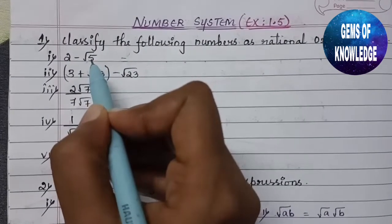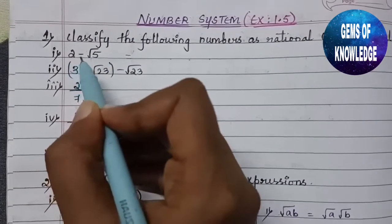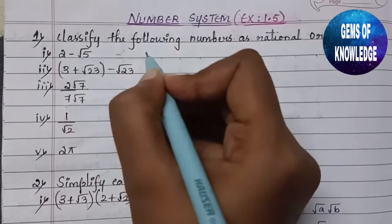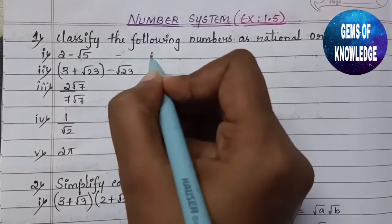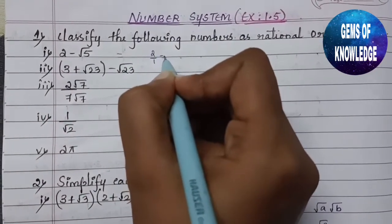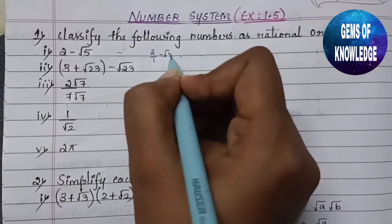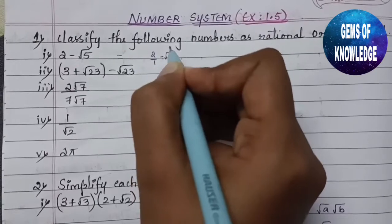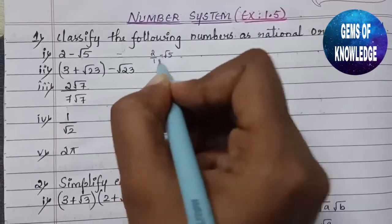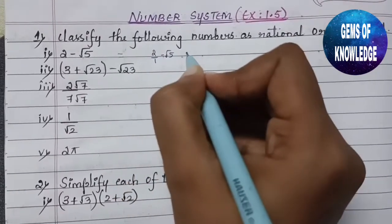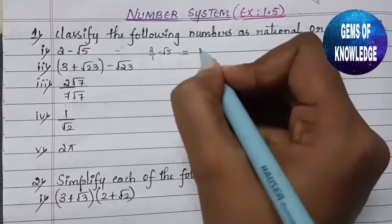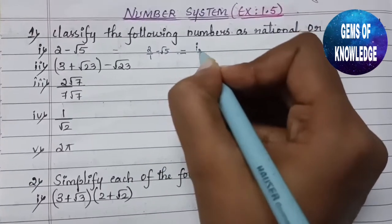Whenever an irrational number is subtracted from a rational number — that is, 2/1 minus root 5 — the answer you get is an irrational number. So 2 minus root 5 is irrational.